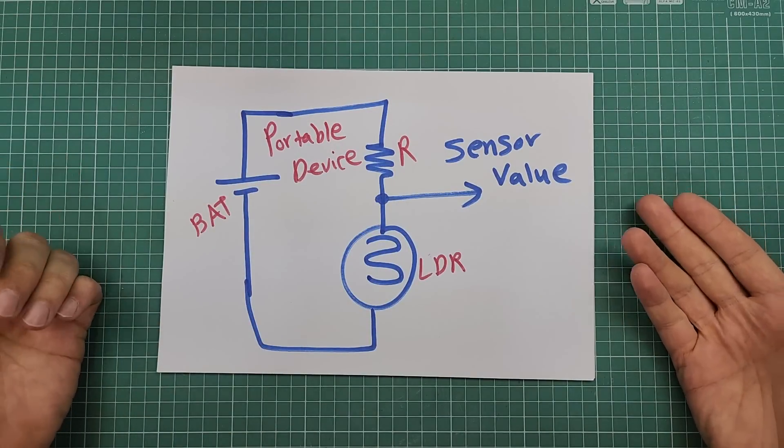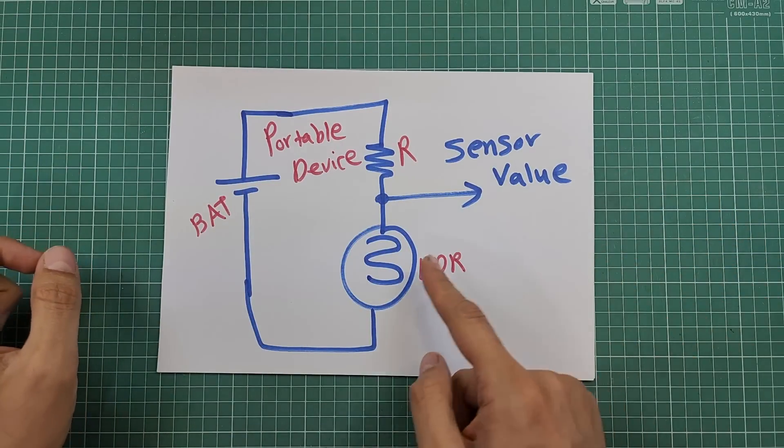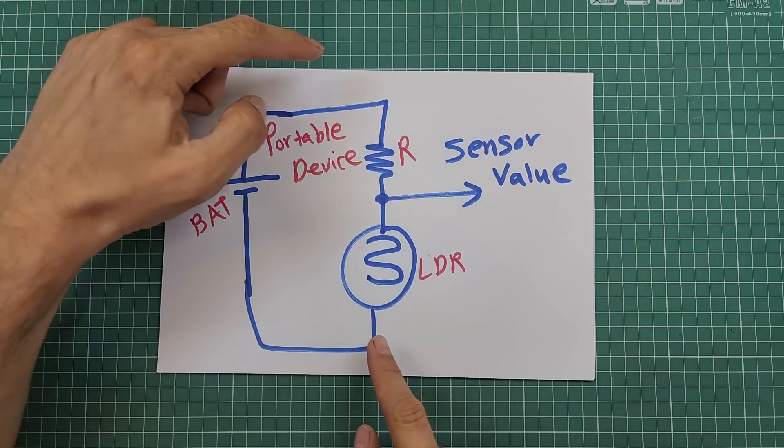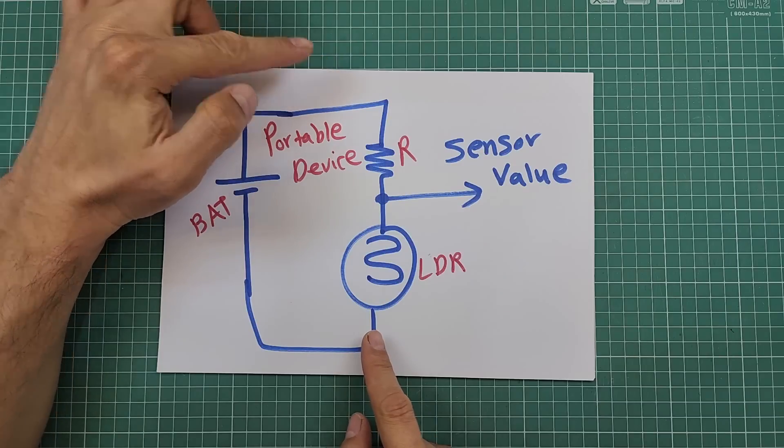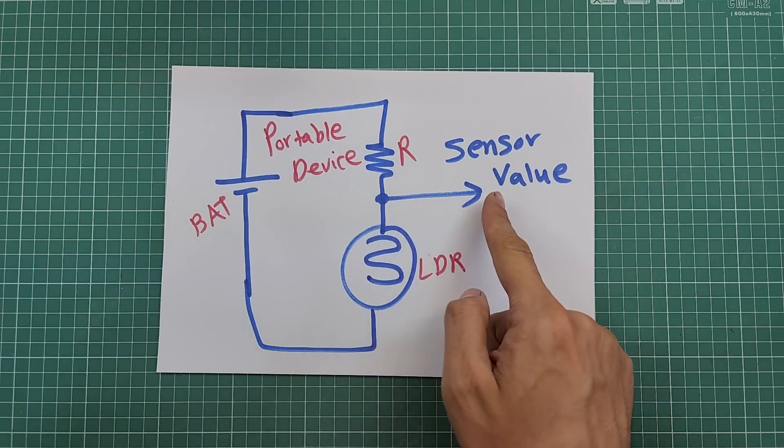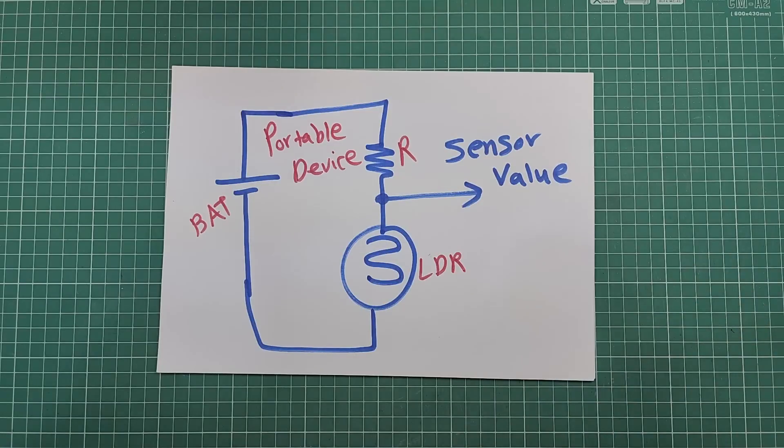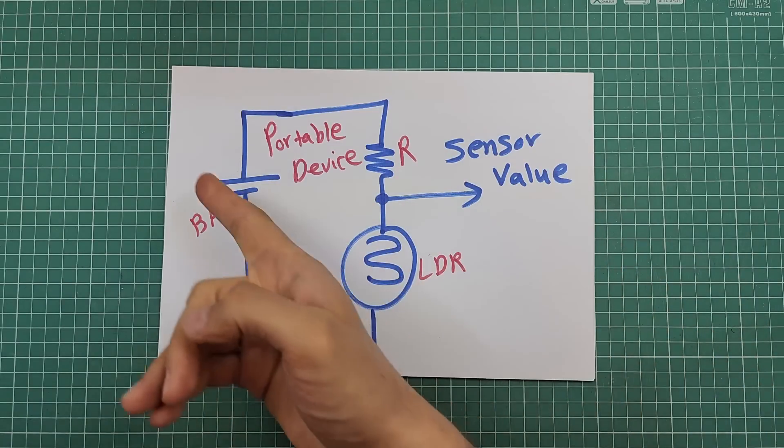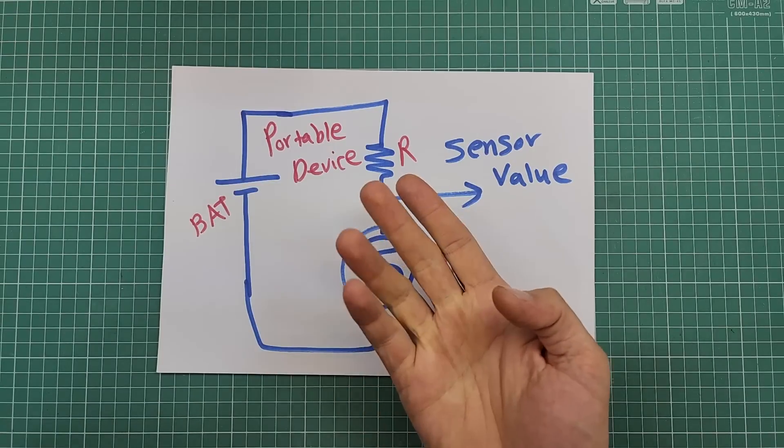Most resistive sensors are used in this way: they are put in series with a fixed resistor and the supply voltage is applied to the circuit. The voltage here at this junction point is used as the sensor value. Now answer this: why am I insisting on a portable device? Can you answer this?